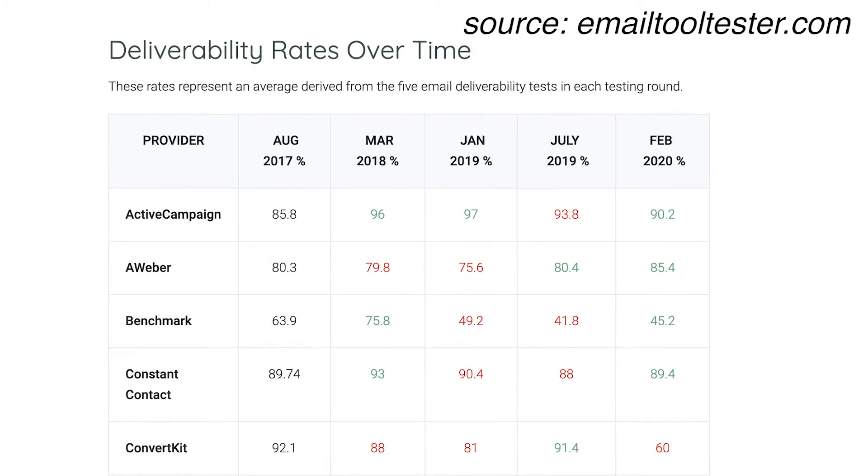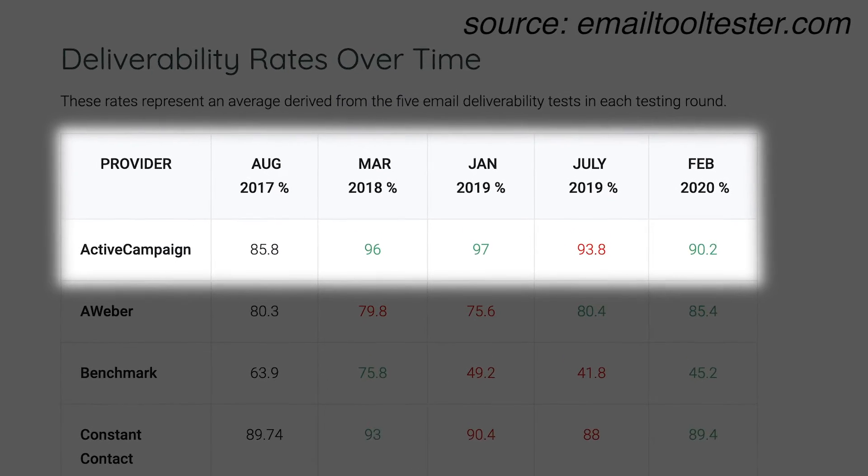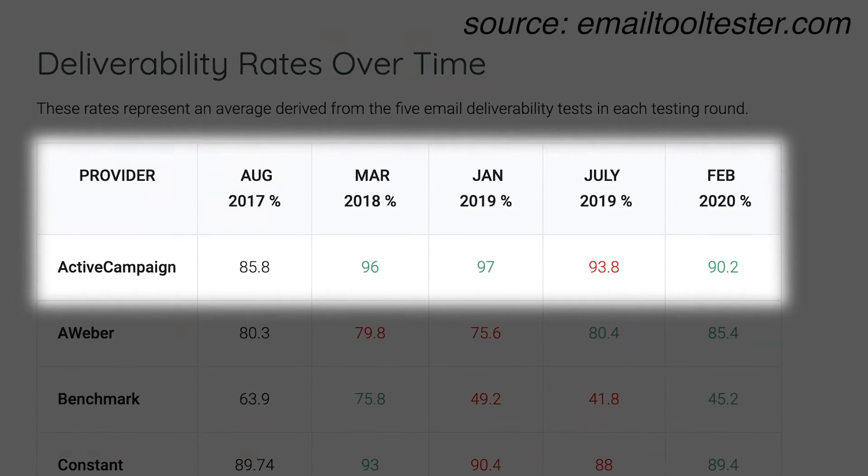ActiveCampaign also gets a lot of good reviews when it comes to deliverability. Having good deliverability means your emails will actually be seen by your subscribers because they'll be delivered to the inbox. That's probably the most important aspect of email marketing — because when nobody finds your emails, it doesn't really matter how good your emails actually are.